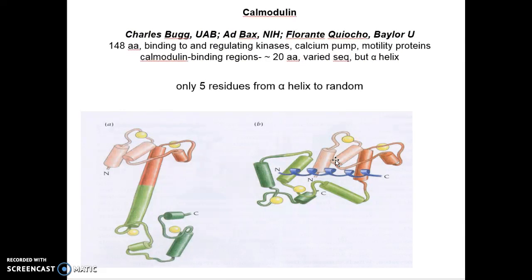Calmodulin is a ubiquitous calcium binding protein of 148 residues that is involved in a range of calcium-dependent signaling pathways. Calmodulin binds to a variety of proteins such as kinases, calcium pump, and proteins involved in motility, thereby regulating their activities. All protein substrates share in terms of structure an alpha helix binding to the calmodulin, even though they vary in their sequences.